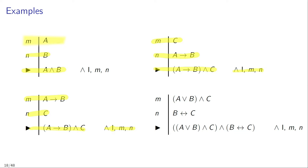To give a final example, suppose that in line M of your proof you have the conjunction 'A or B and C', and in a later line you have the biconditional 'B if and only if C'. Then you can infer the long conjunction 'A or B and C, and B if and only if C', and justify this inference using the rule conjunction introduction.